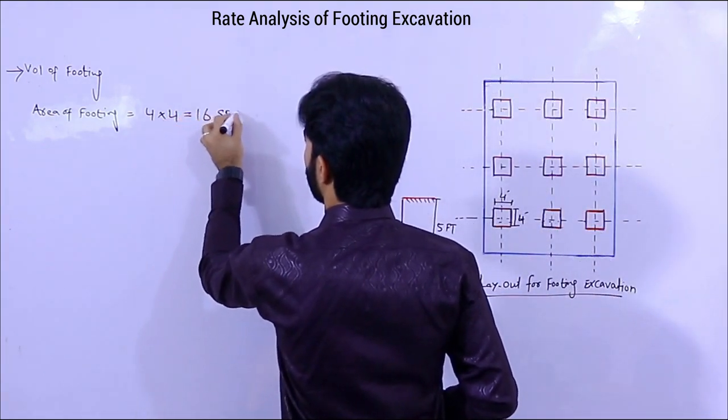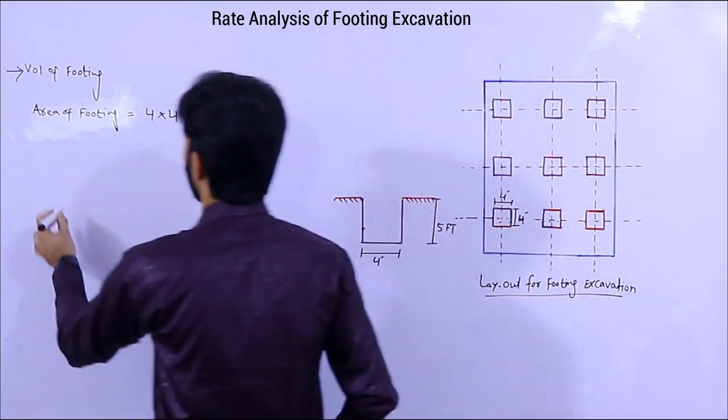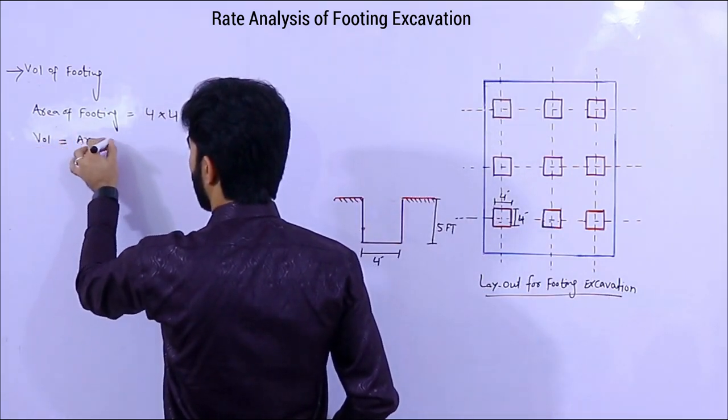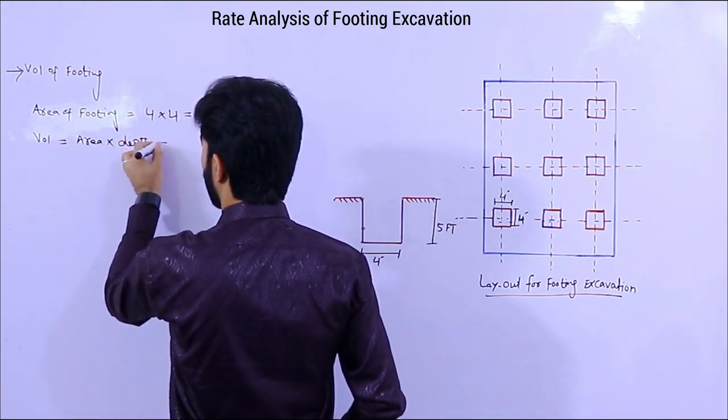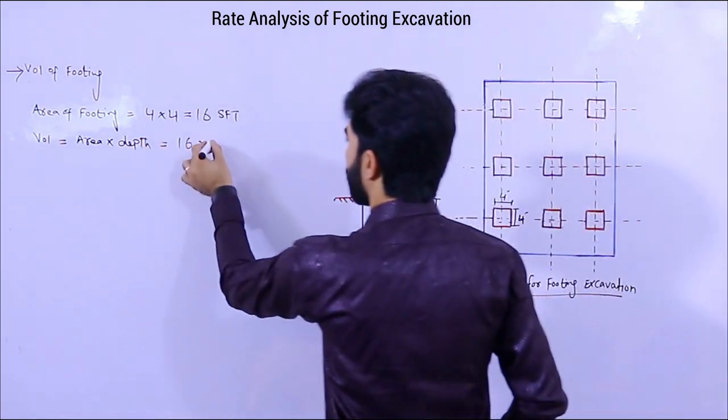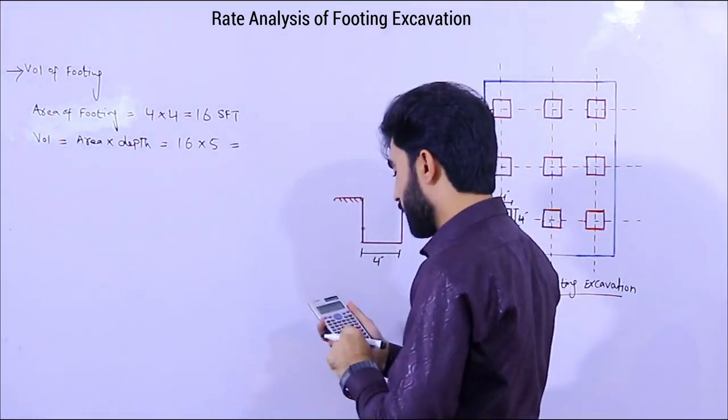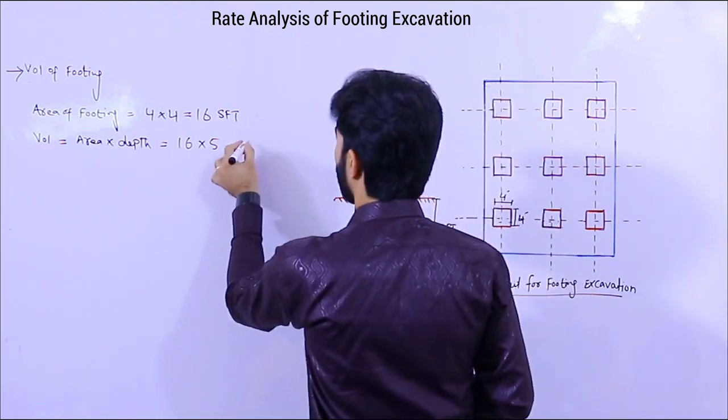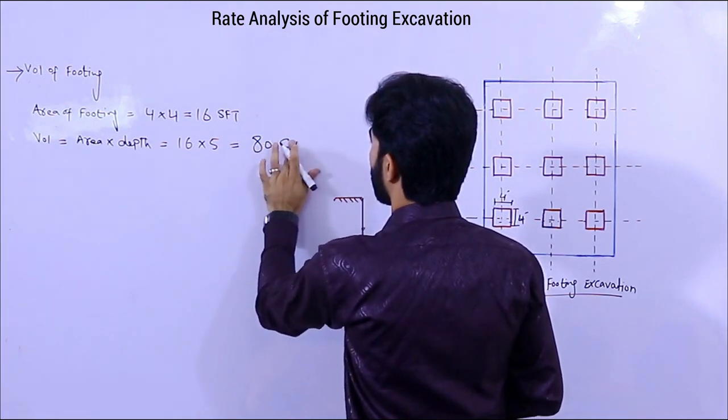Now I need the volume. For the volume, area multiply depth. The area is 16, multiply depth is 5 feet. So each footing volume is 80 cubic feet or CFT.